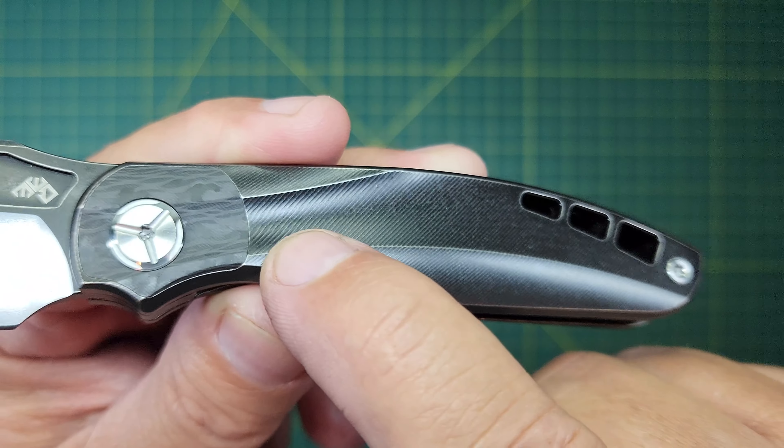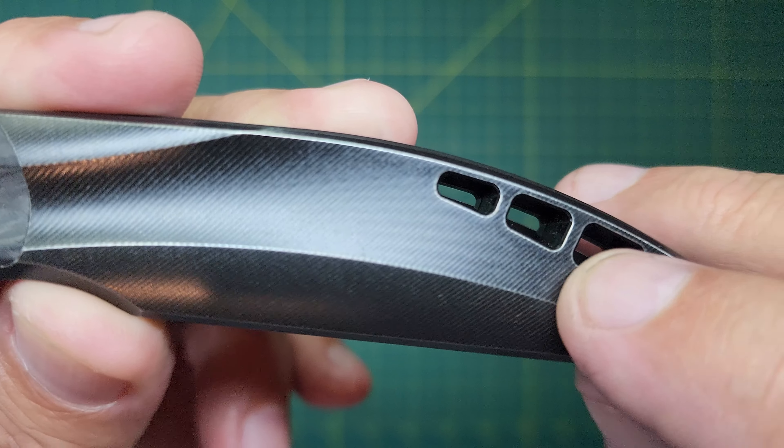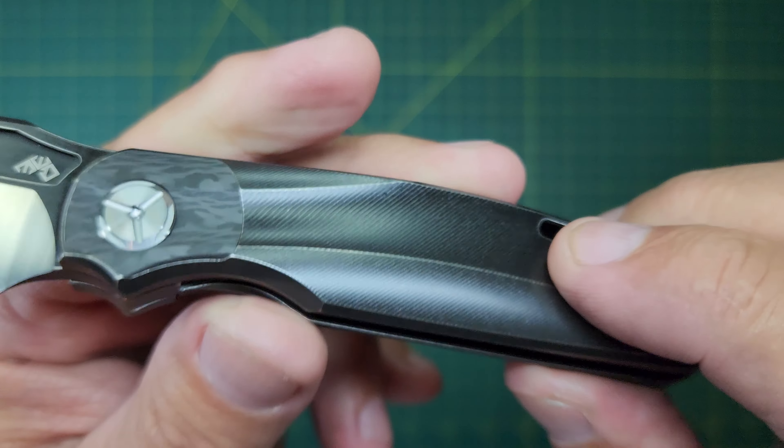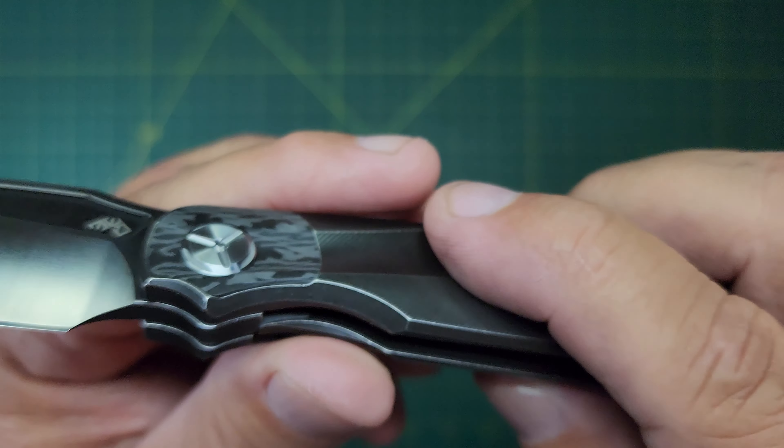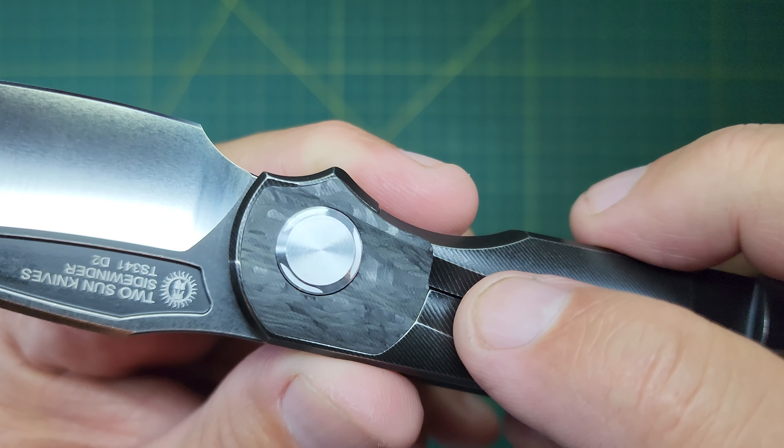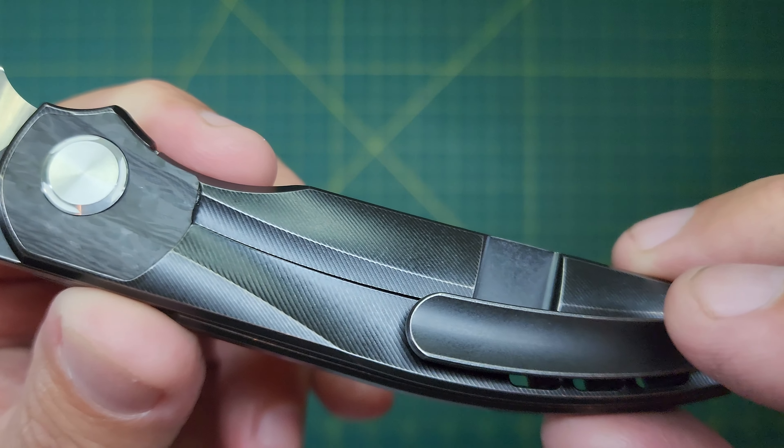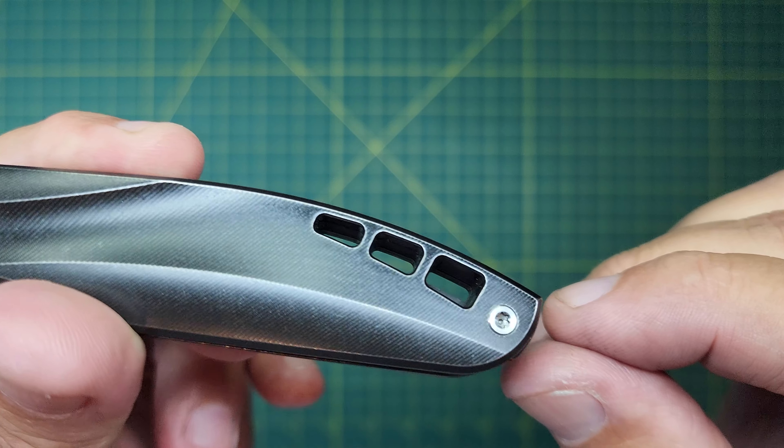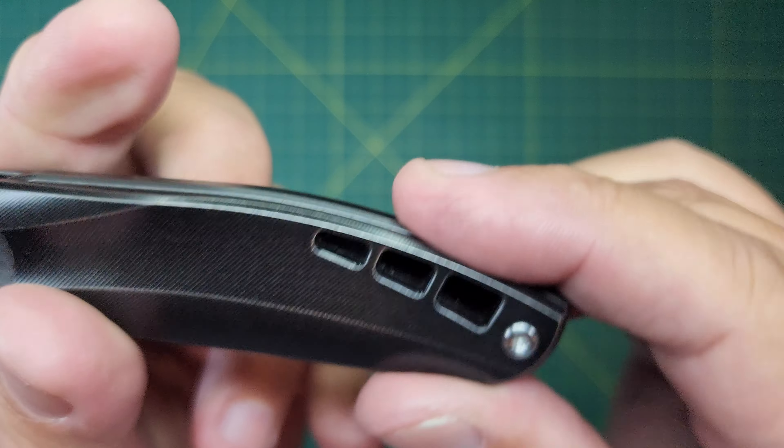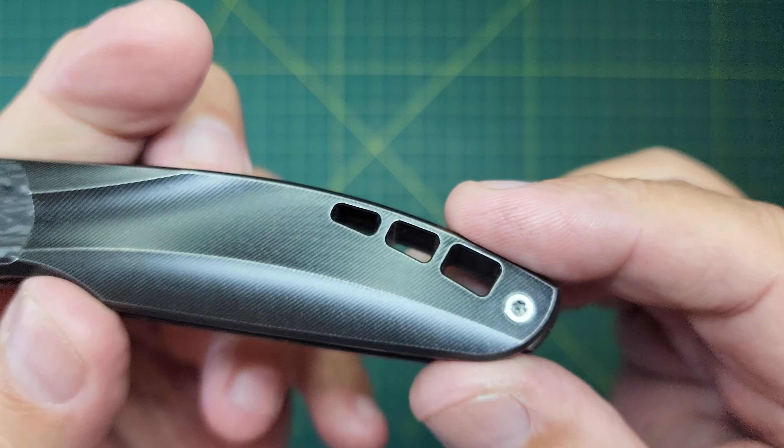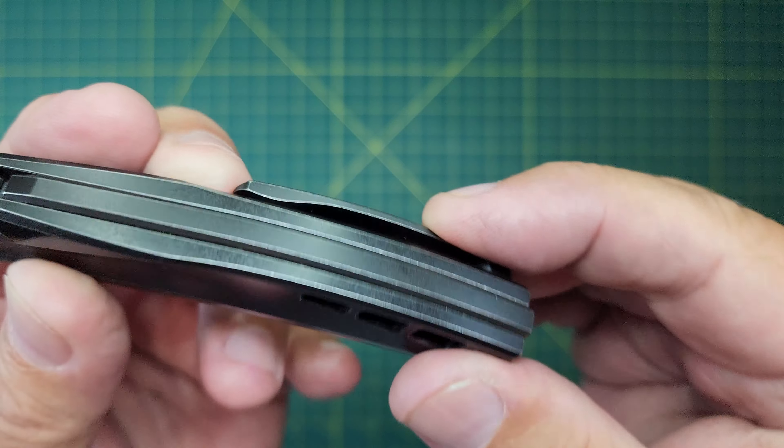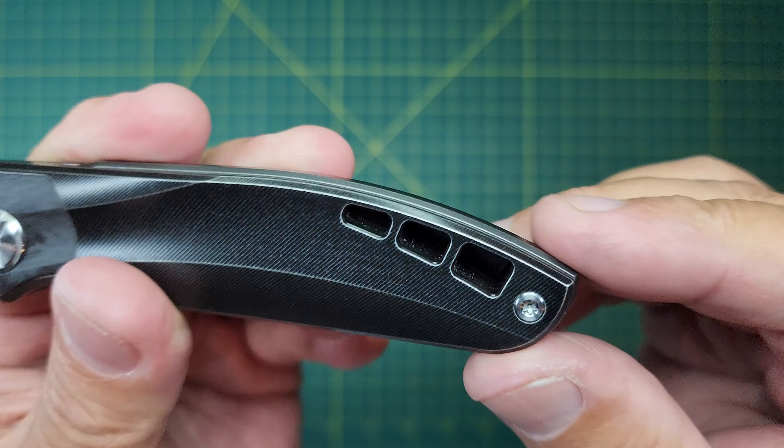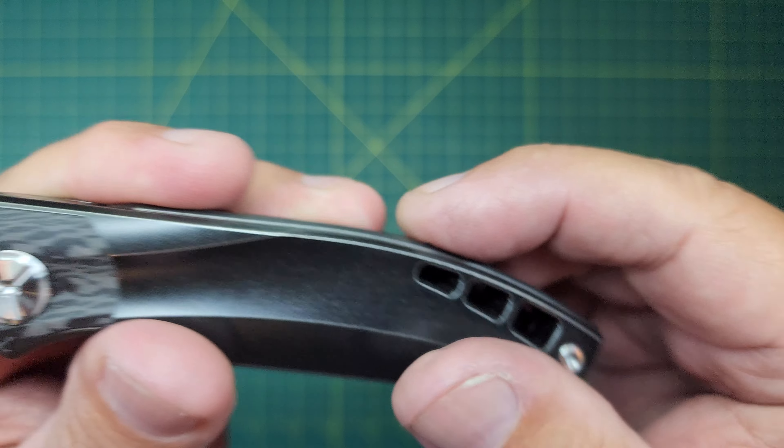It's got this great milling on these titanium scales, which makes it a little grippy. It's got the carbon fiber up in the bolsters here. Really nice. A little weight reduction, and I'm going to guess that it's also potentially for a lanyard to go through there, or I guess you could if you wanted to. I don't know if that's it by design.